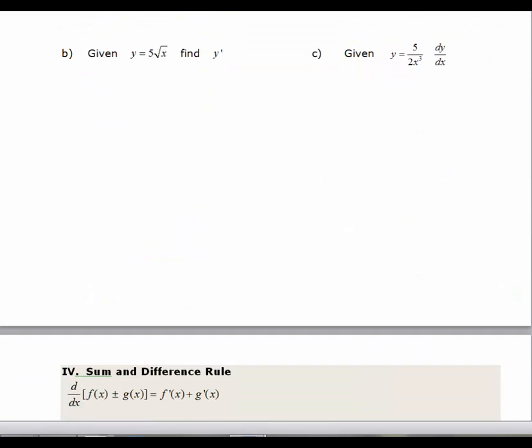Alright, let's bring ourselves down to, this actually should be part c. And the next one should be d. Sorry about that. Okay. So I have got y equals 5 times the square root of x. And I want to find y prime. So the first thing I want to do is rewrite this as 5x to the 1/2.